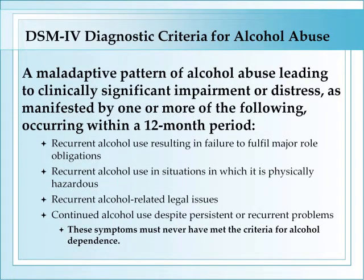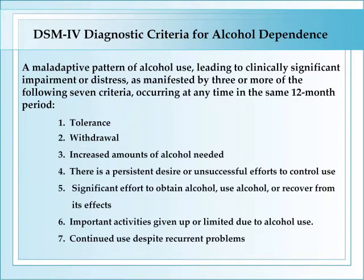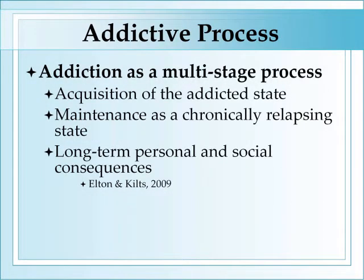The DSM defines diagnostic criteria for both alcohol abuse and alcohol dependence, and while overlapping, they both include a maladaptive pattern of alcohol use leading to clinically significant impairment or distress. When looking at the addictive process, we typically think of it as a multi-stage process: acquisition of the addicted state, maintenance as a chronically relapsing state, and long-term personal and social consequences.